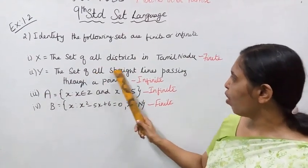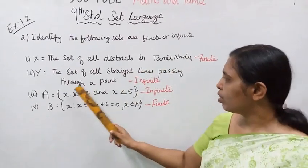Second, Y = the set of all straight lines passing through a point.